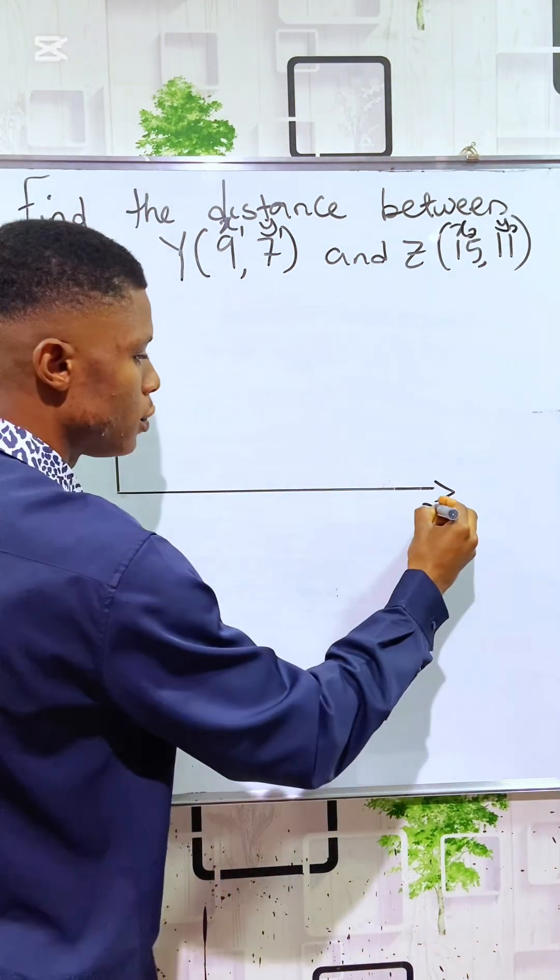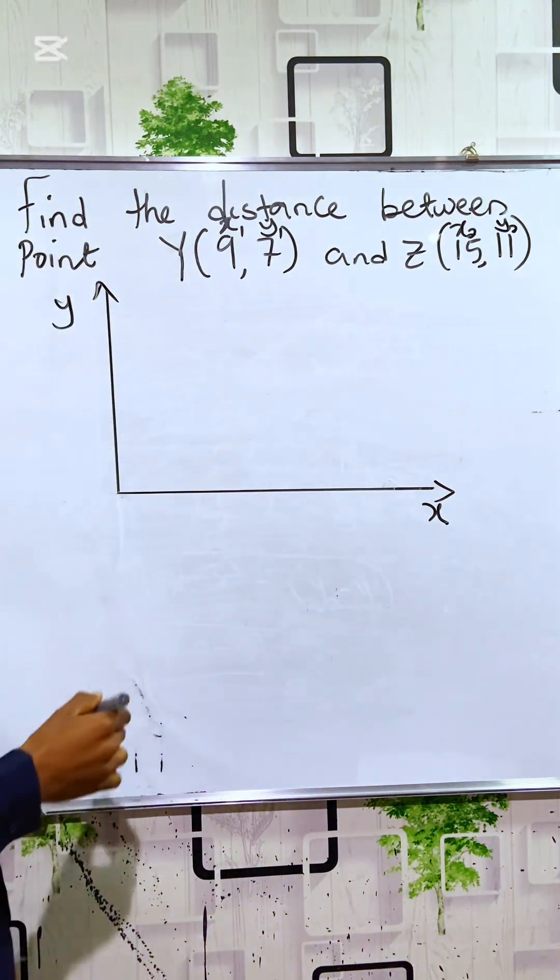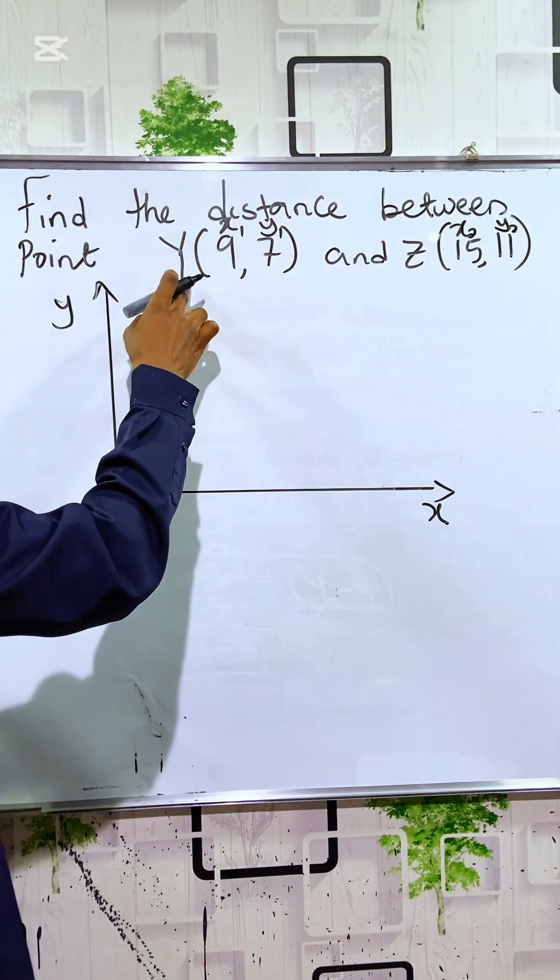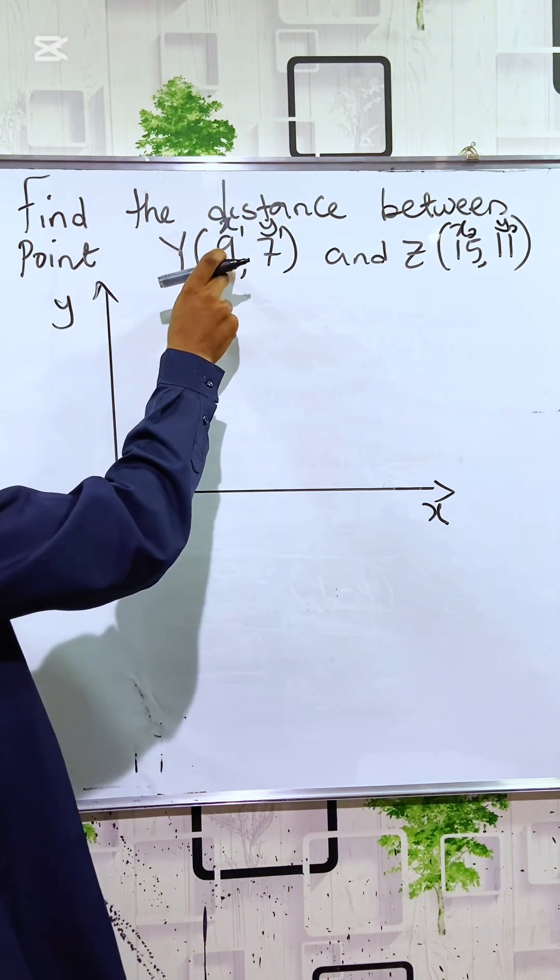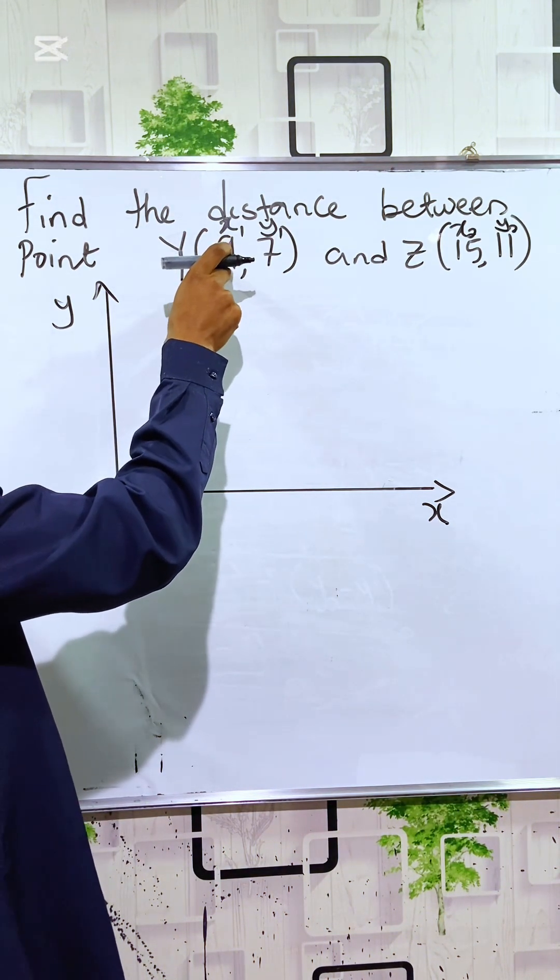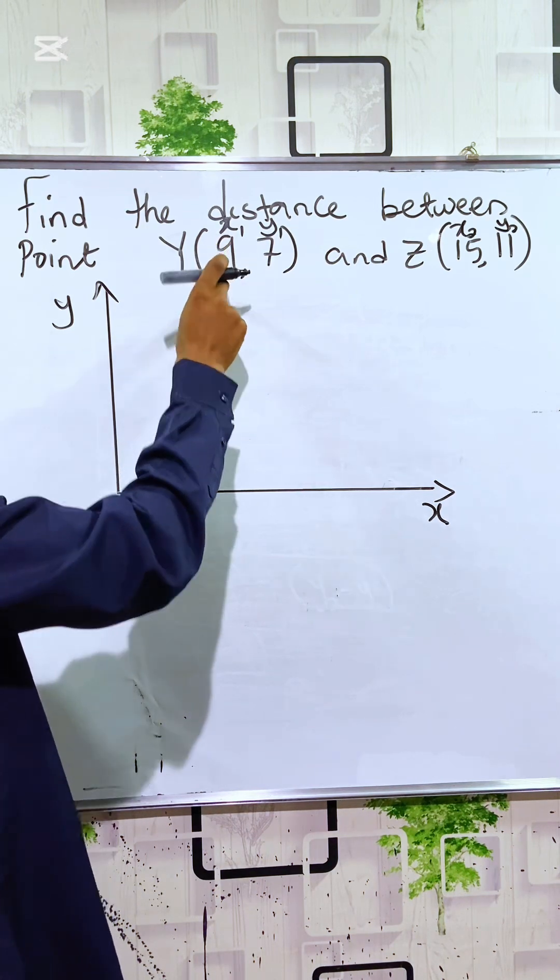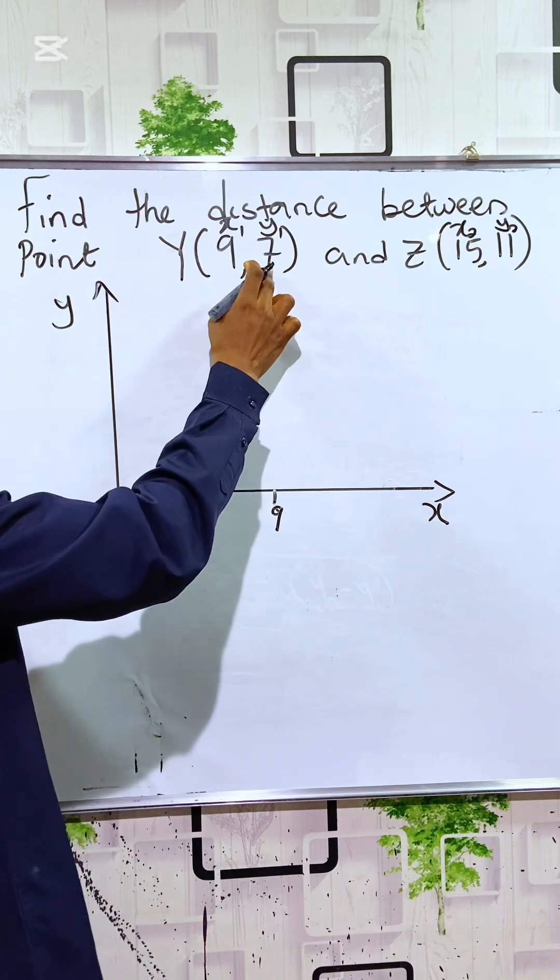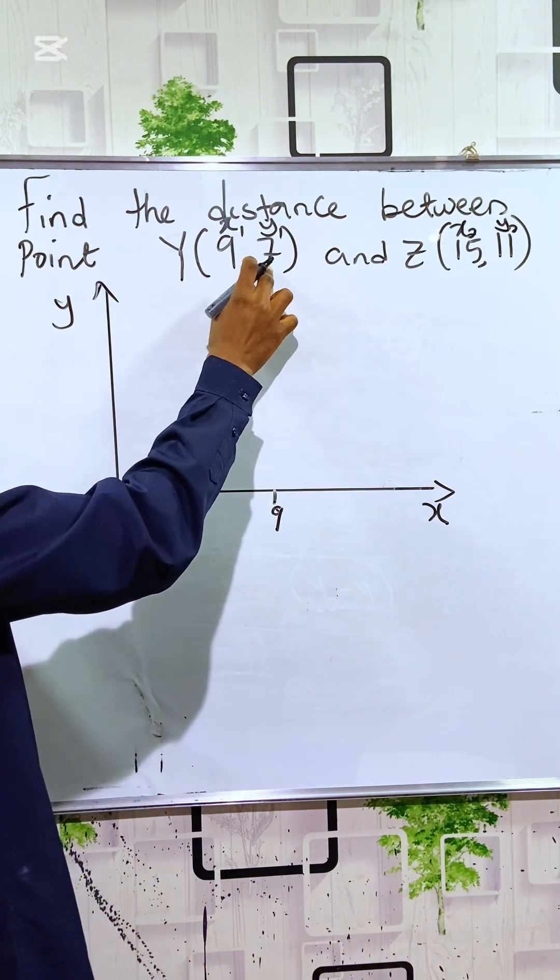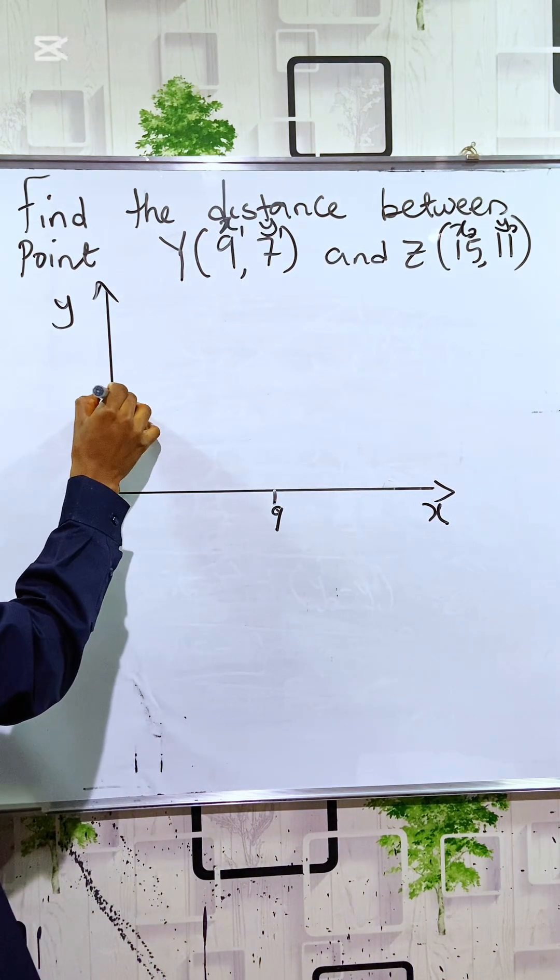Here is called the X axis, Y here is called the Y axis. So let's locate point M on the plane. Point M has a coordinate of X to be 9, so let's use this point to be 9, and has a Y coordinate to be 7. Let's use here to be 7.